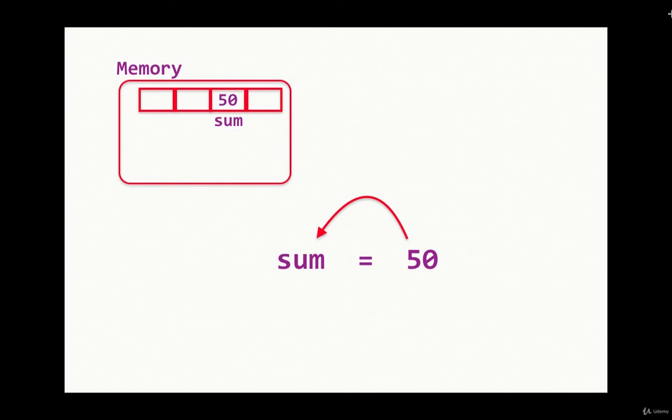Everything that we do in Python has a memory location. You can think of memory location as a series of empty blocks which can store values. So when I make a variable and assign a number to it, it stores that number in a random block of memory and names that memory location as the variable name.